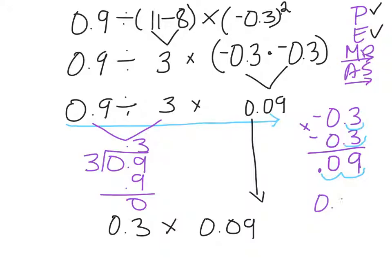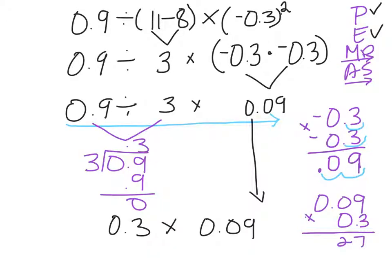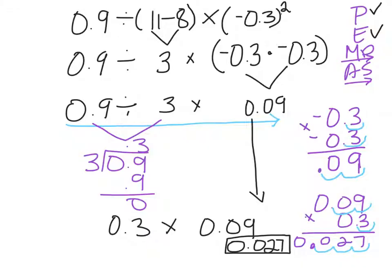Off to the side, let's set up this equation: 0.09 multiplied by 0.3. We ignore the decimal when we start, so 3 times 9 is 27. Then we count up our place values: here the decimal is 2 place values to the left, and in the second number it's 1 place value to the left — a total of 3 place values to the left — and that's where I put my decimal point. So my final answer to this equation is 27 thousandths.